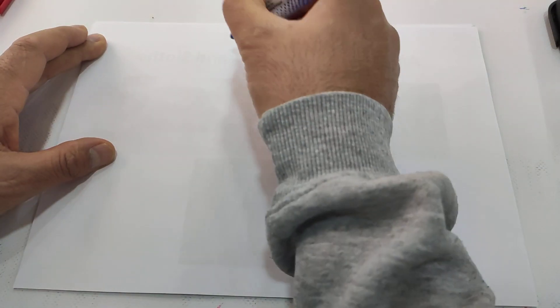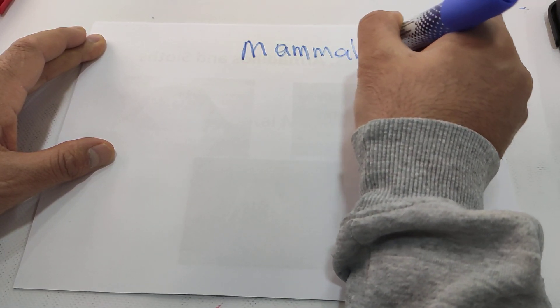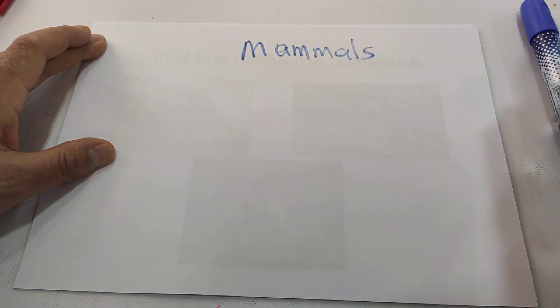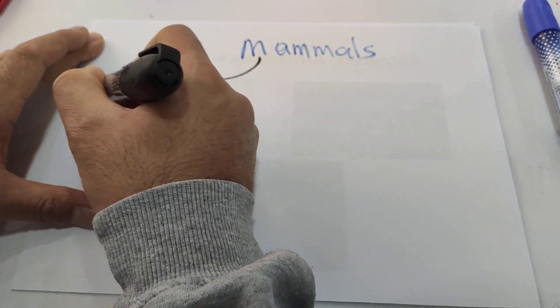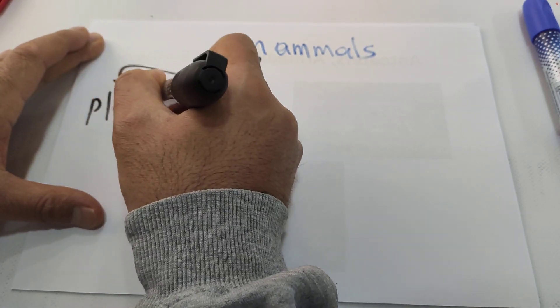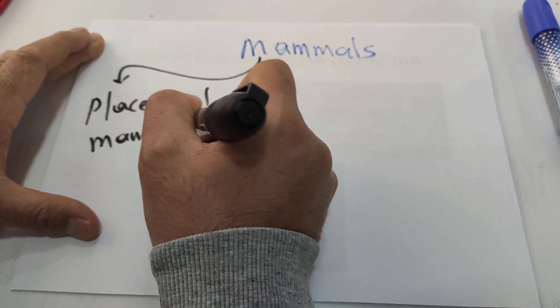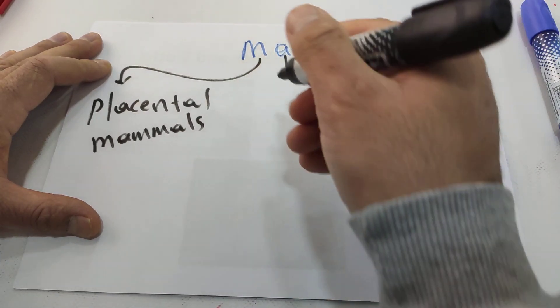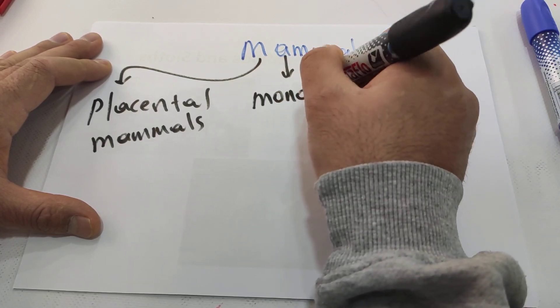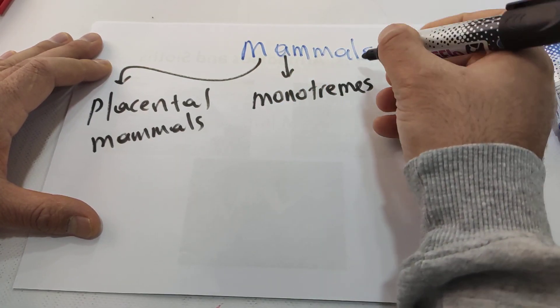Hi students, today our topic is mammals — kinds of mammals. As you know, there are three kinds of mammals: the first kind is placental mammals, the second group is monotremes, and the third...